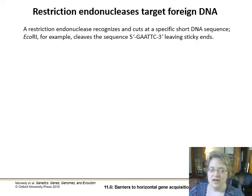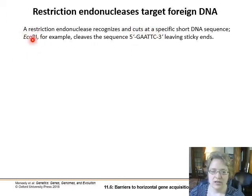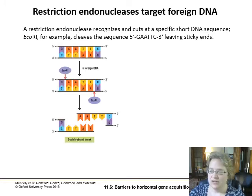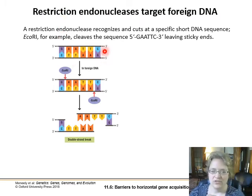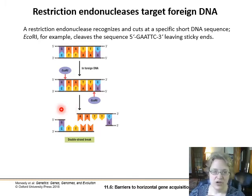Another tool bacteria use to target foreign DNA are restriction endonucleases, which cleave at recognition sites. EcoRI — E. coli restriction enzyme 1 — was one of the first restriction enzymes discovered. They're called restriction enzymes because they're restricted to looking for a specific site to cut; they won't cut anywhere else. This particular enzyme looks for an exact sequence and then cuts the backbone at a specific spot, leaving a sticky end and making a double-strand break. These double-strand breaks make it easy for other nuclease enzymes to come chop up the viral DNA into pieces.